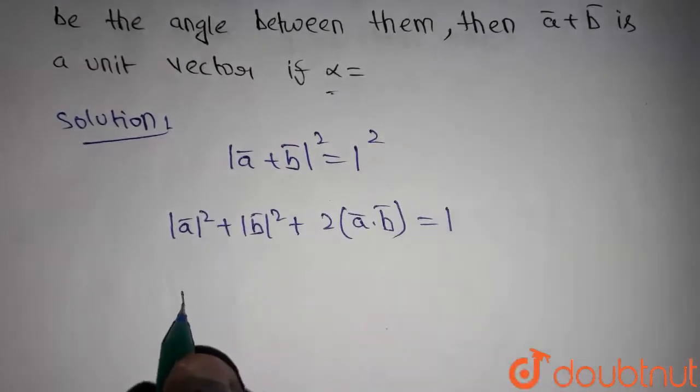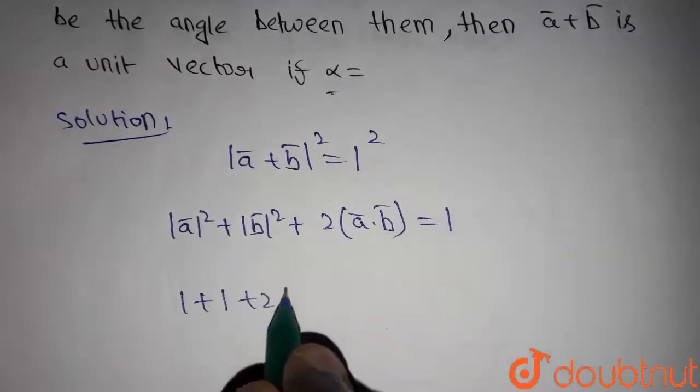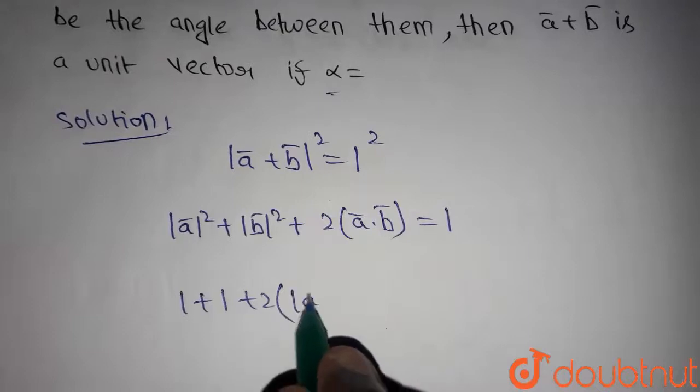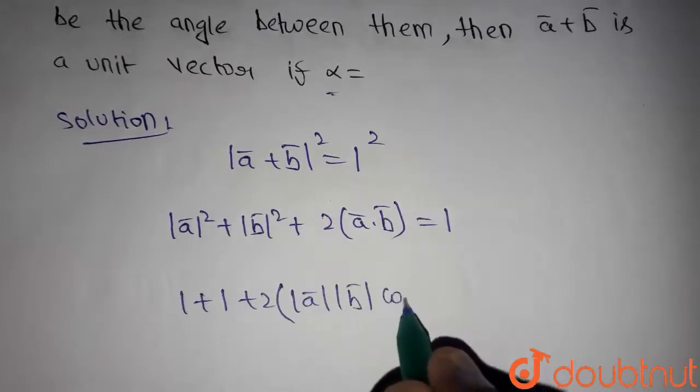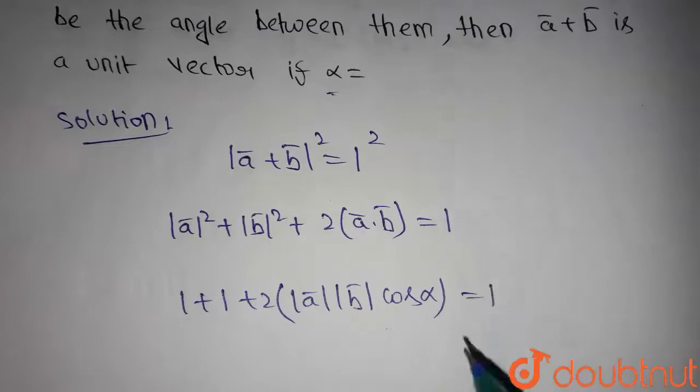We know that a and b are unit vectors, so substitute the values here. Plus two times, we can write a dot b as magnitude of a times magnitude of b times cos alpha equals one.